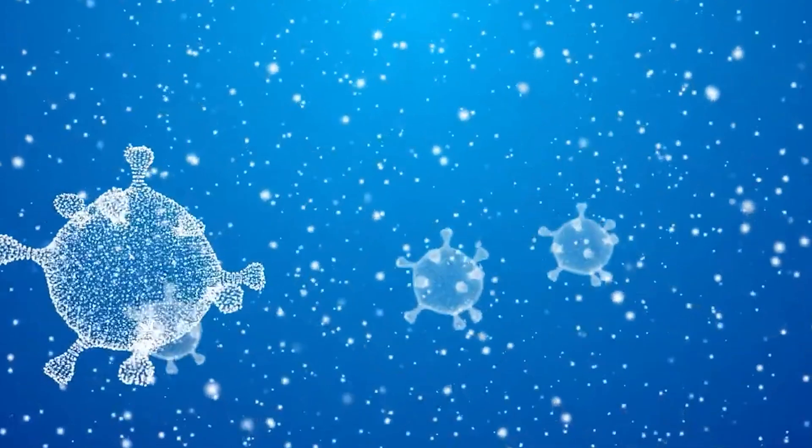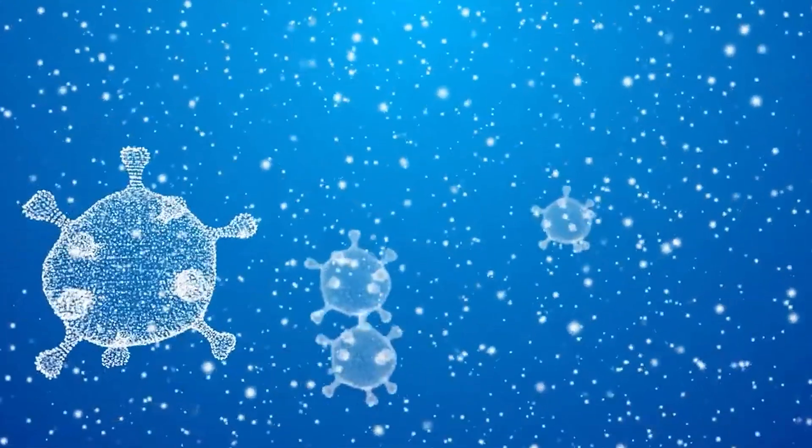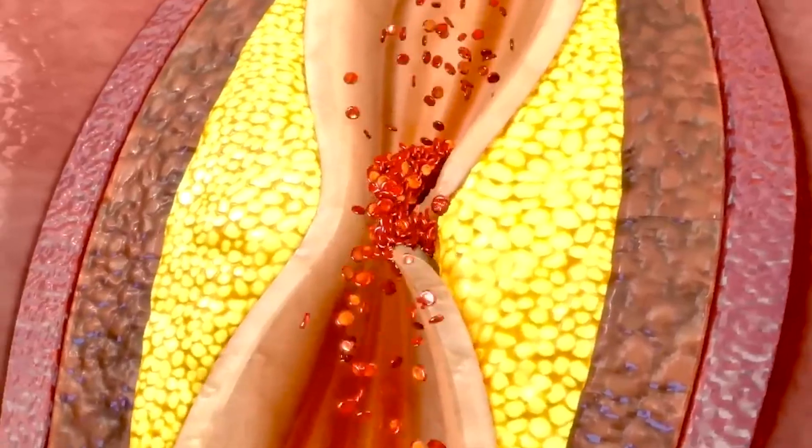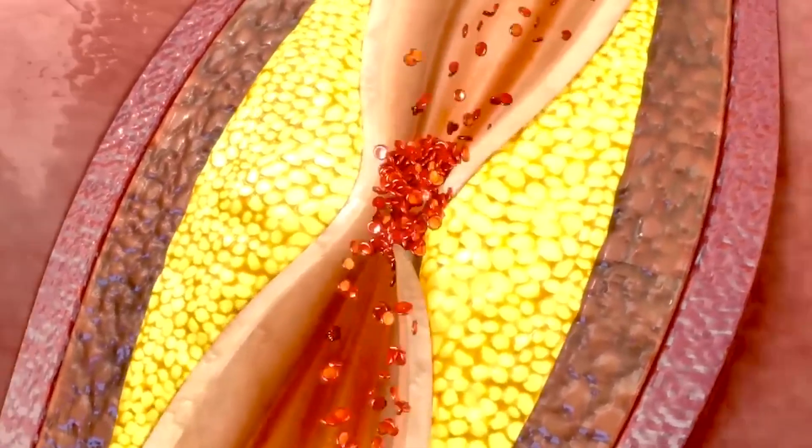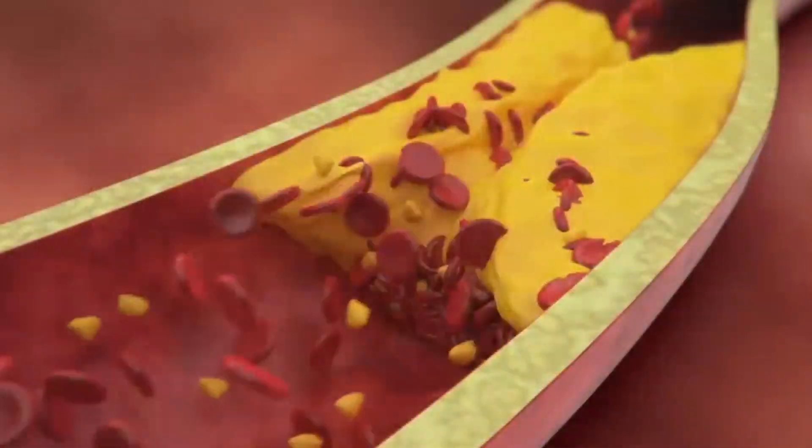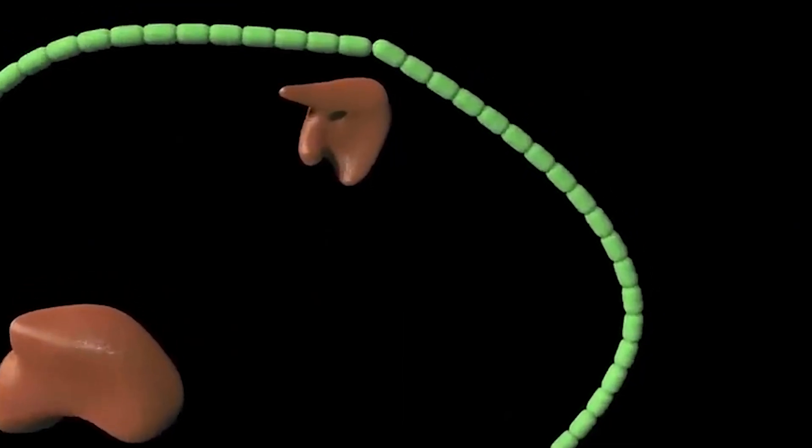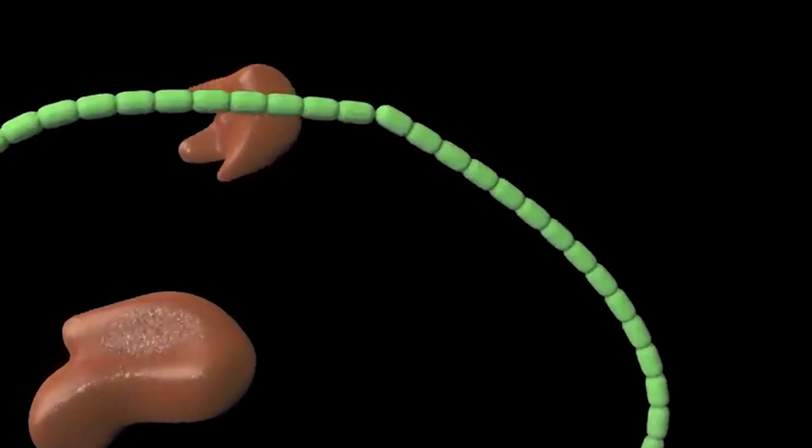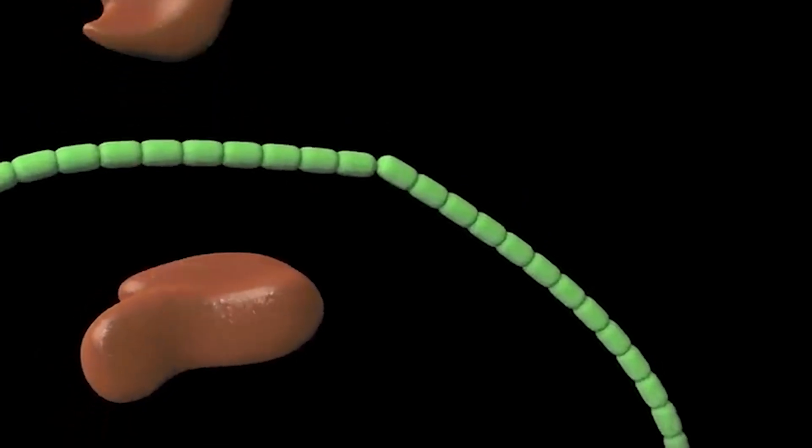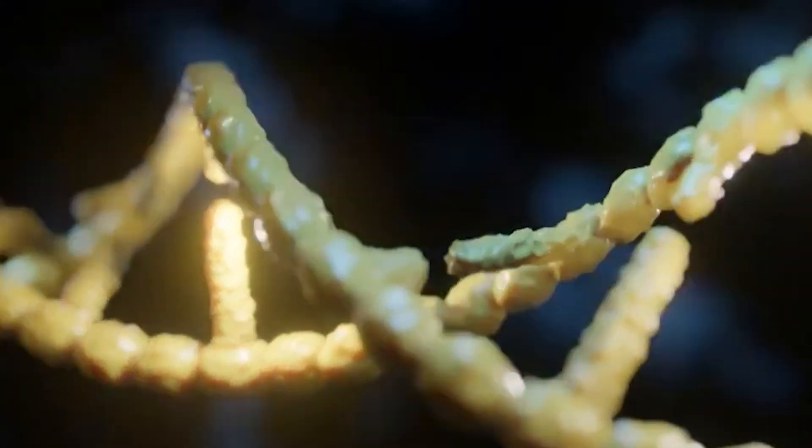Think about what this means. The organ shortage that kills thousands of people every year waiting for transplants could simply cease to exist. Organ rejection, where the body attacks foreign tissue, becomes irrelevant when the organ is grown from your own cells. We're looking at a future where age-related organ failure is no longer terminal, but treatable.